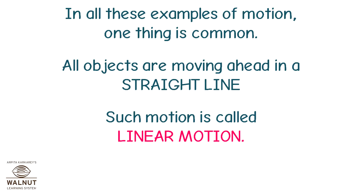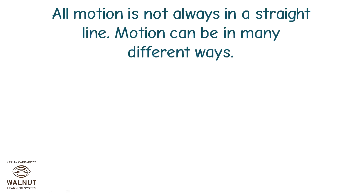In all these examples of motion, one thing is common: all objects are moving ahead in a straight line. Such motion is called linear motion. All motion is not always in a straight line — motion can be in many different ways.